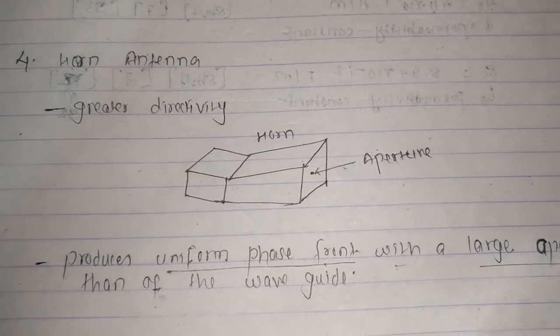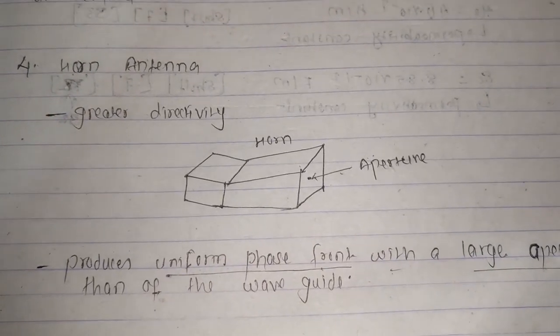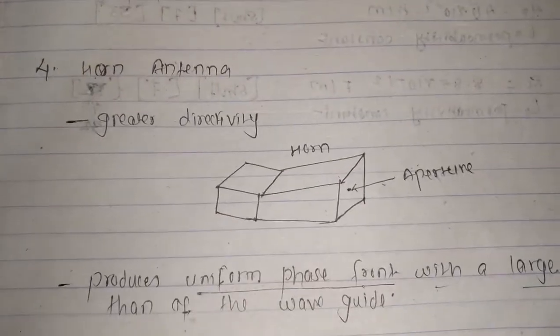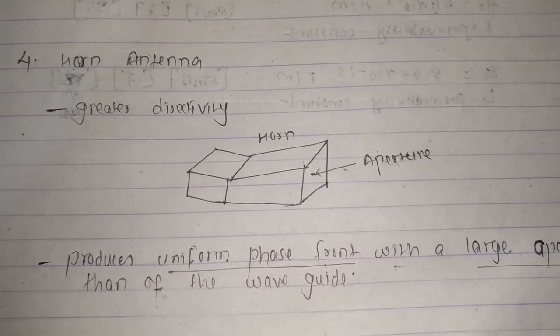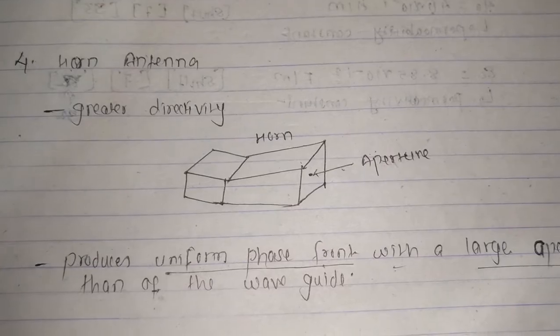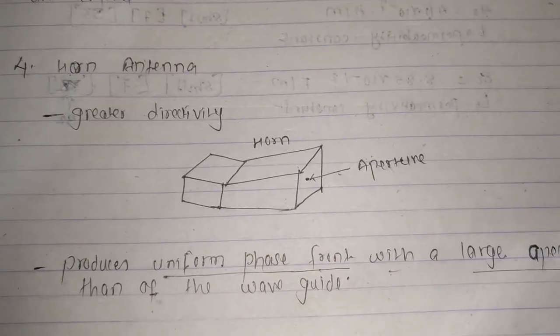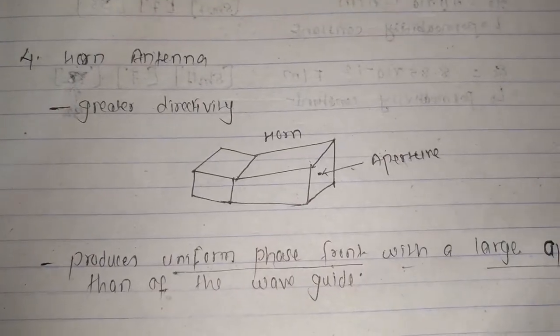It is in the size of a horn, so the name became horn antenna. It has greater directivity. You can see the clear image here. It's just informative, so no need to worry about it. Just remember the things and know what exactly it is.